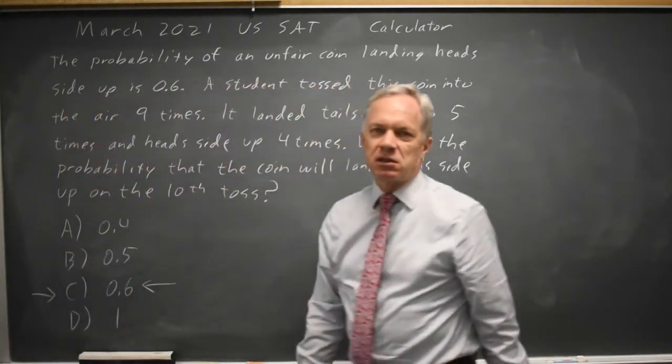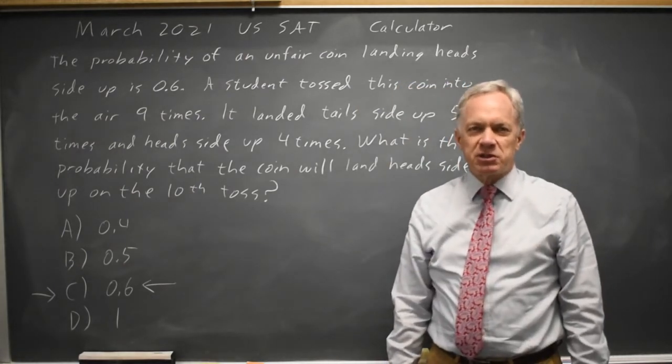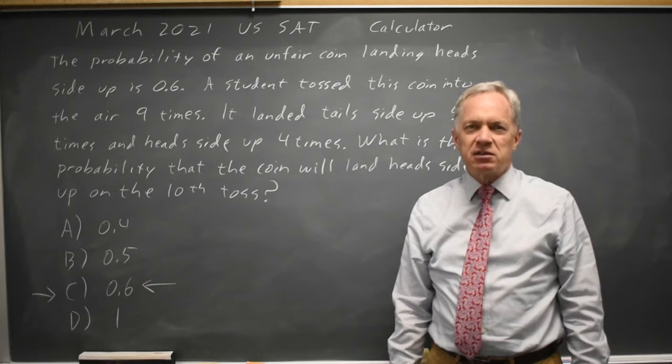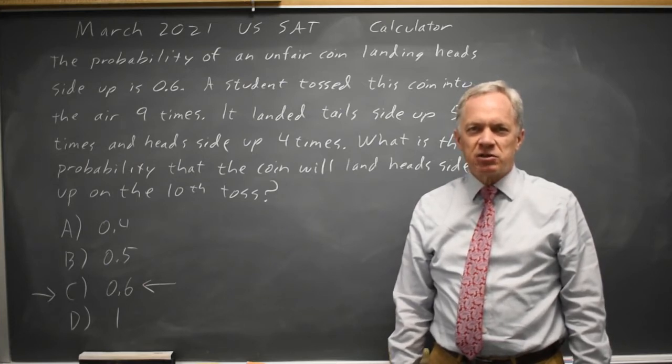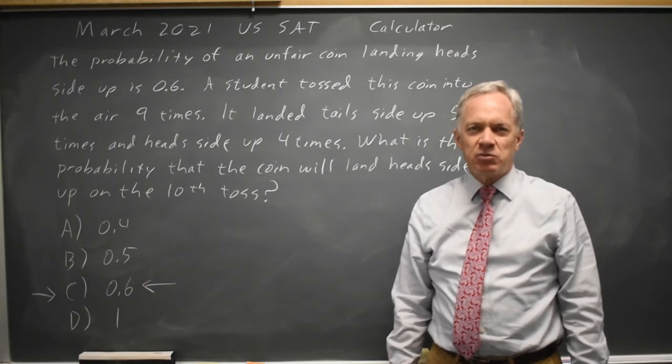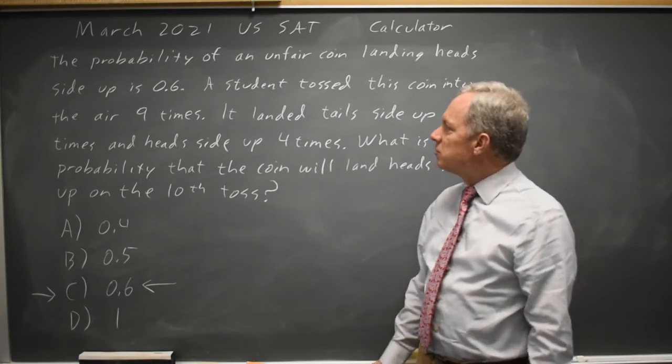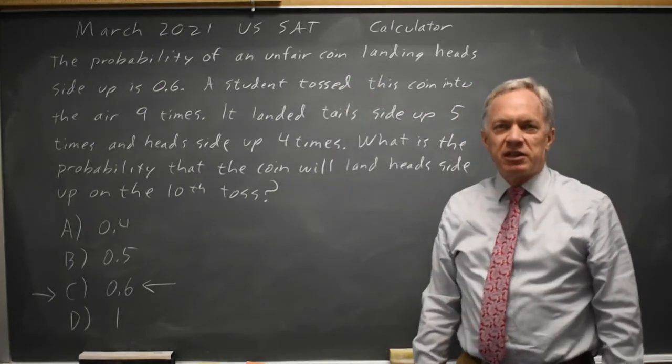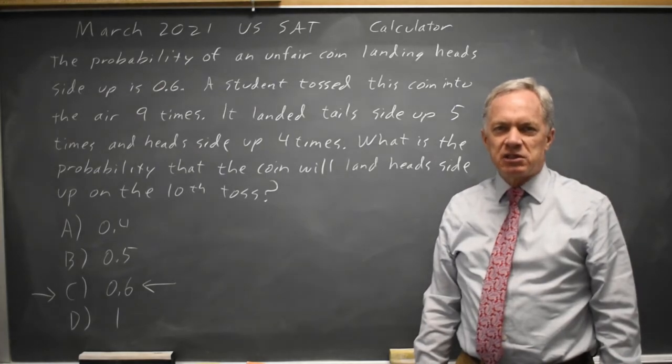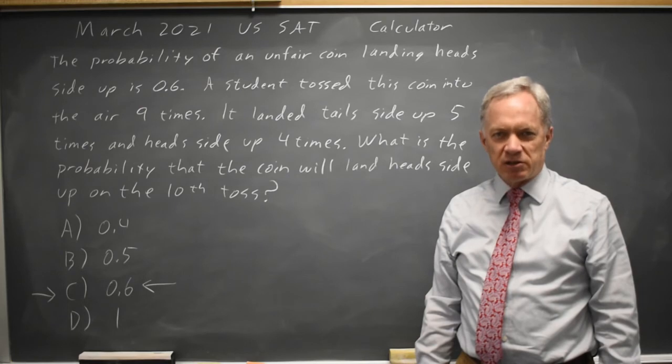The idea that proportions have to average out in the short term is called the Law of Averages and it is not true. If College Board asks about this, they're testing to see if you believe in that fallacy called the Law of Averages. Make sure you remember, if the probability is given as 0.6, the previous outcomes do not affect the next flip and so the probability is still 0.6.